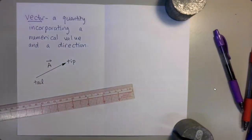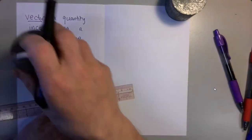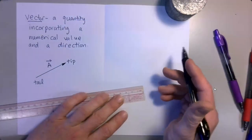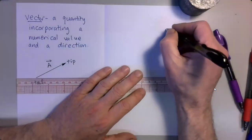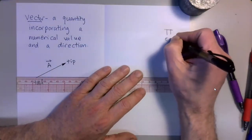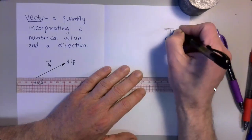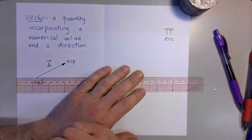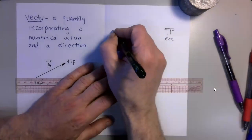Now what would be some examples of vector quantities? Well, suppose somebody asked you how to get to El Camino College. Let's say this is El Camino College here. Somebody asked you how to get from El Camino College to the Manhattan Beach Pier.